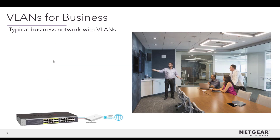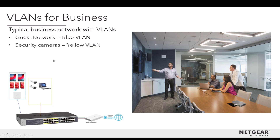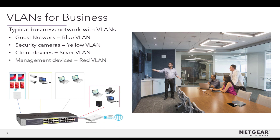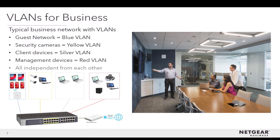Here's the same business network, but now divided into VLANs. The blue VLAN is dedicated for the guest network, the yellow VLAN is dedicated to security cameras, the silver VLAN is for client devices, and the red VLAN is for management devices. All devices are independent of each other and protect sensitive information. Therefore, if visitors are streaming video and IP cameras are recording, the all-hands meeting in the red VLAN is crisp and unaffected.